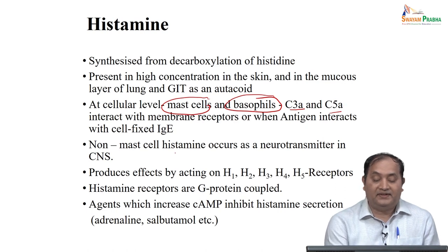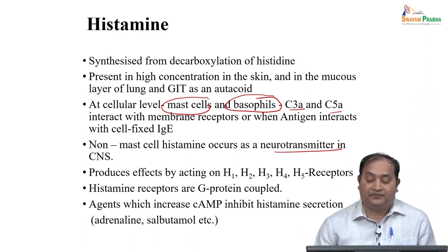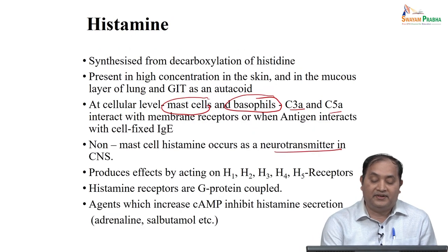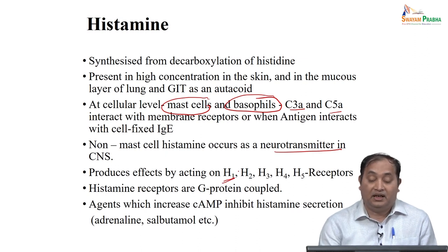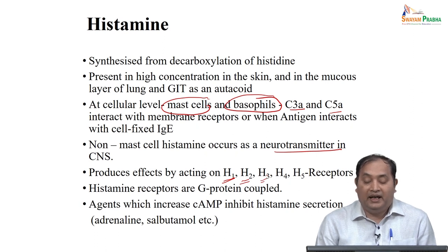However, there is non-mast cell histamine that occurs as a neurotransmitter in CNS cells. When you look at the receptors, once histamine is released, it acts on different receptors. One is the H1 receptor, which mediates allergic reactions. H2 receptors are mostly in the stomach. H3 receptors are considered autoreceptors in the CNS, as well as H4 and H5 receptors.